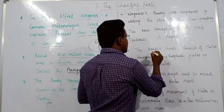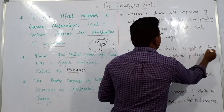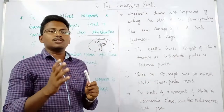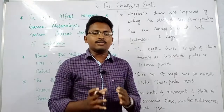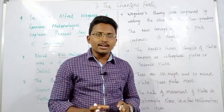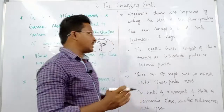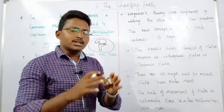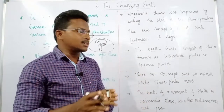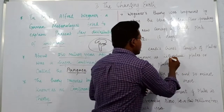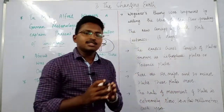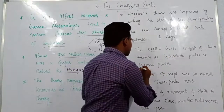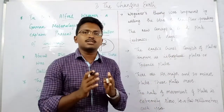The first feature of plate tectonics is that the Earth's crust consists of plates known as lithospheric plates or tectonic plates. As we know, the Earth is divided into three different layers: crust, mantle, and core. The top layer — the crust — has been divided into different plates, which we call lithospheric plates or tectonic plates.